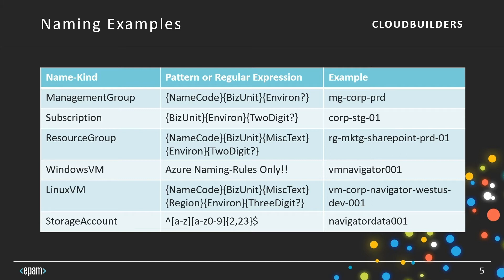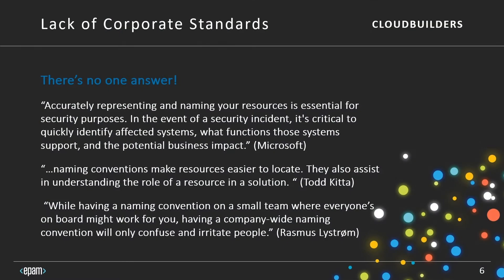I'm going to show you a program called Azure Names, where it validates names according to patterns or regular expressions. For instance, a storage account is validated to a regular expression, whereas a Linux VM name is validated to a pattern. So that covers the technical side of naming — but that's only half the battle. What if you want to have a corporate standard for your own names? In any substantially sized company, you're going to have lots of problems coming up with one naming standard.